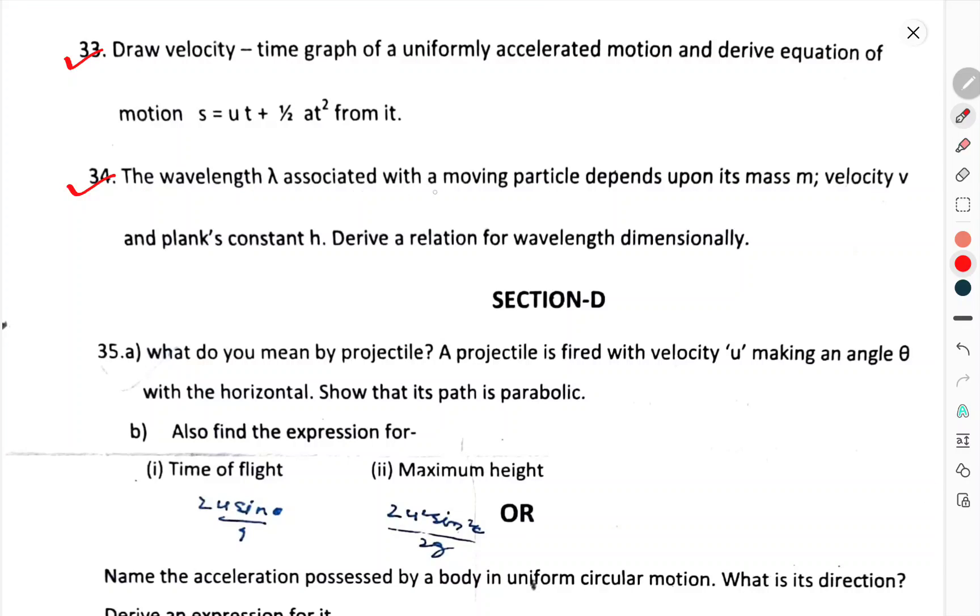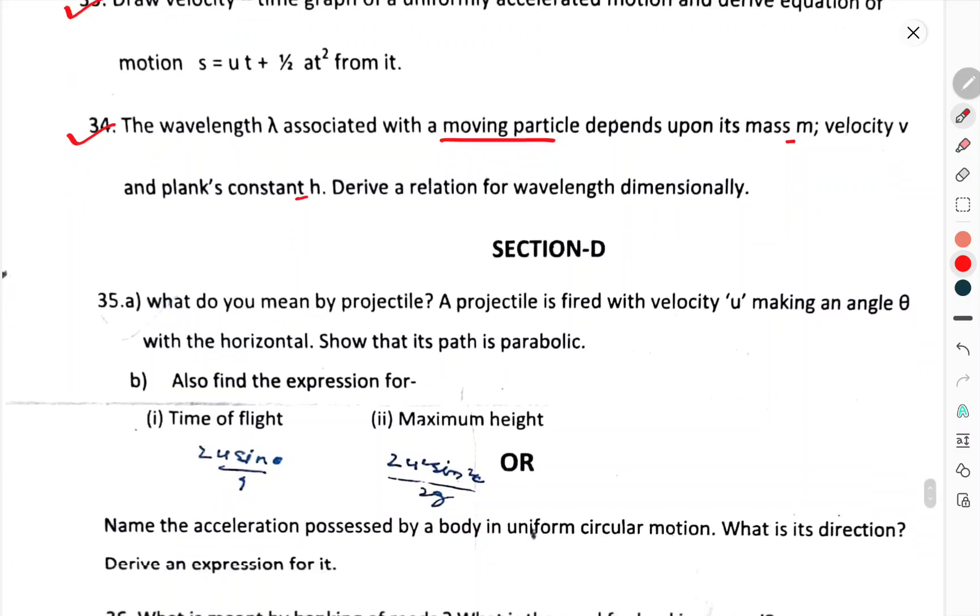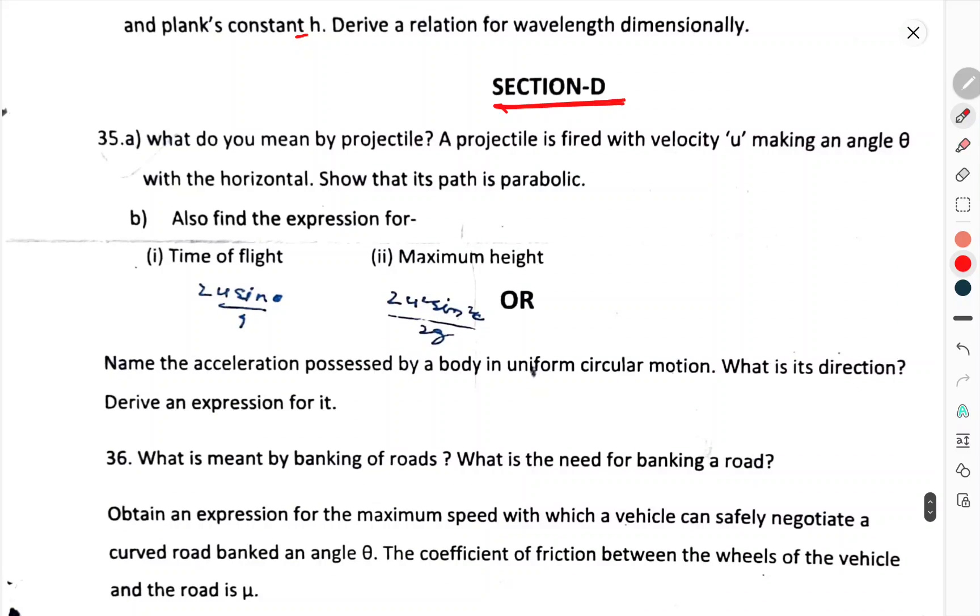Question number 33. Draw velocity time graph for uniform acceleration motion and derive the equation of motion s equals u t plus half a t square for a minute. Question number 34. The wavelength lambda associated with the moving particle depends upon its mass M, velocity V, Planck's constant H. Derive the relation for the wavelength using dimensional analysis. Section D.